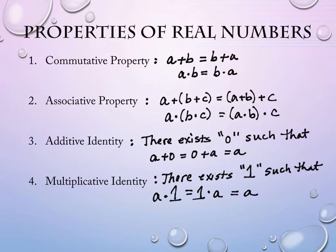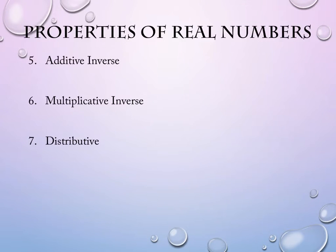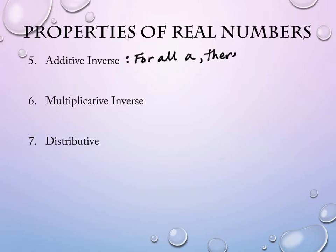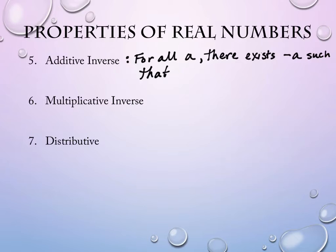We also have — these come in pairs — the additive identity and multiplicative identity, and we also have the additive inverse and multiplicative inverse. The additive inverse says for all values a, there exists a negative a, such that a plus negative a, or negative a plus a, is equal to zero.